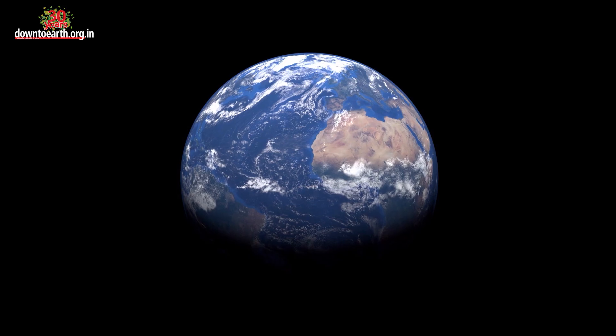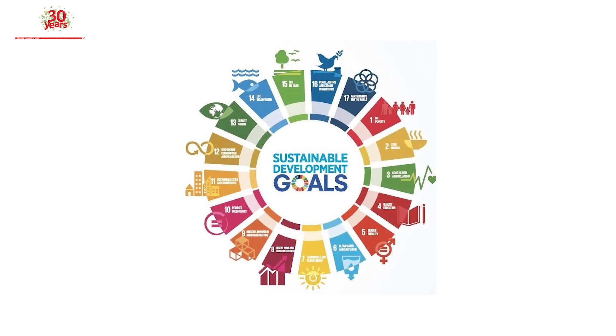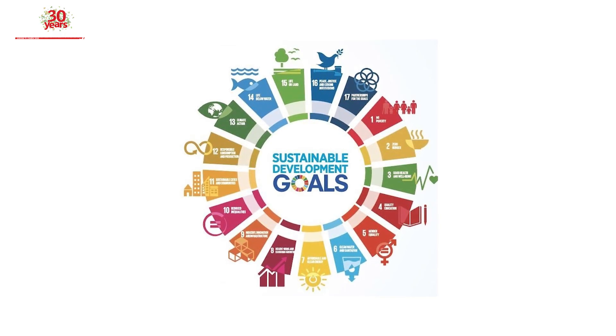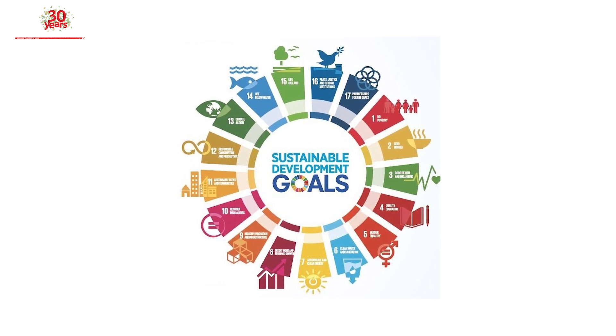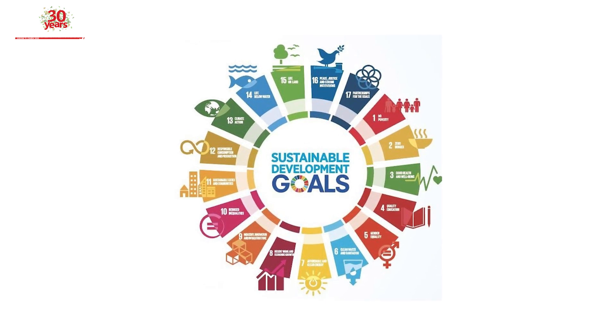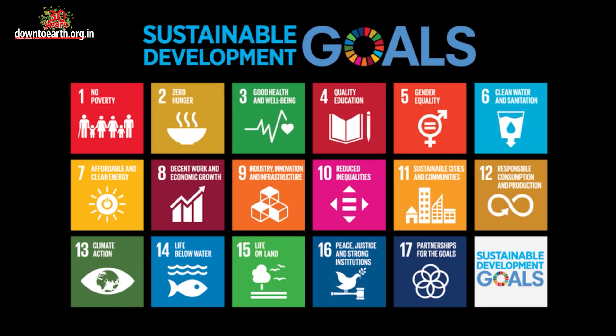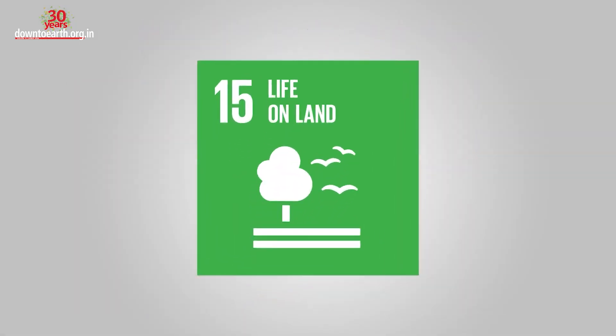The Sustainable Development Goals, or Global Goals, are a collection of 17 interlinked global goals designed to be a blueprint to achieve a better and more sustainable future for all. The SDGs were set up in 2015 by the United Nations General Assembly and are intended to be achieved by 2030. SDG 15 focuses on life on land.